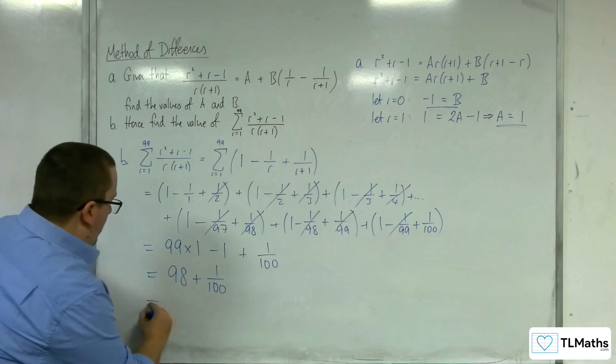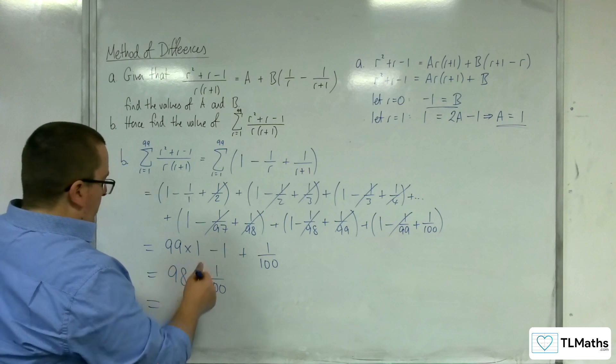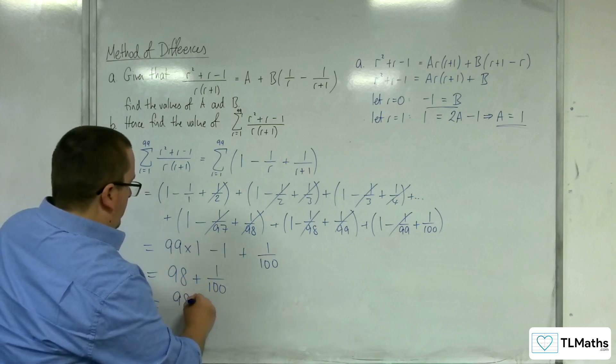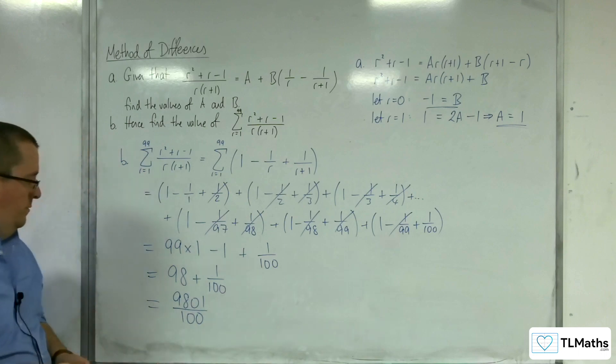So I've got 98 plus 1 over 100. So what's that? Well, 98, so 9,800 plus 1.